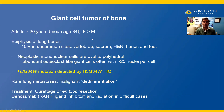such as the vertebrae, the sacrum, head, neck, hands, and feet. It is composed of neoplastic mononuclear cells, which are oval to polyhedral — some can be spindled, somewhat epithelioid. The osteoclast-like giant cells often will have greater than 20 nuclei per cell. The number of osteoclast-like giant cells can be very variable.